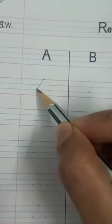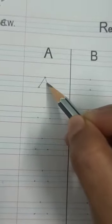So how to write A? Slanting line, slanting line, sleeping line. A.